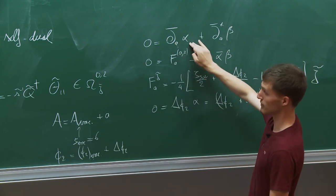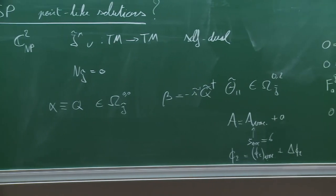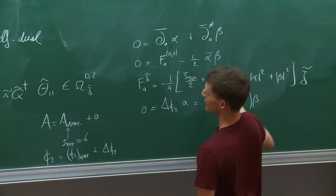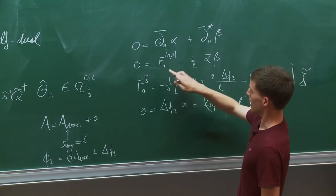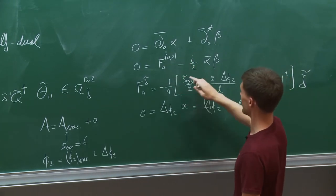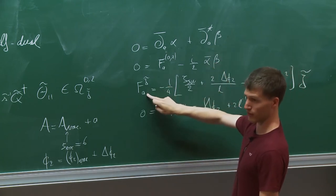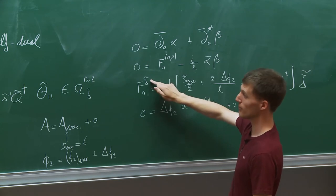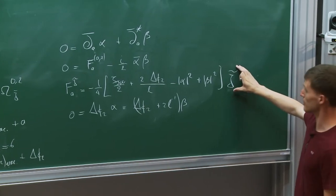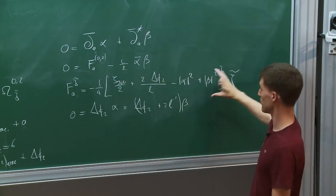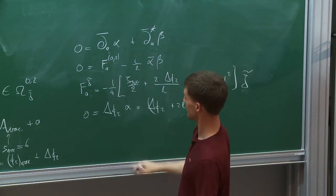Going through the equations: we have the gauge-covariant derivative acting on alpha (a (0,0)-form); a star acting on the (0,2) component of the field strength; the (0,2) part of the field strength equals a bilinear in alpha and beta; the component of the field strength proportional to J-tilde (the self-dual object) involves something that looks like the vacuum equation; and further equations coupling delta Phi_2 to these fields.